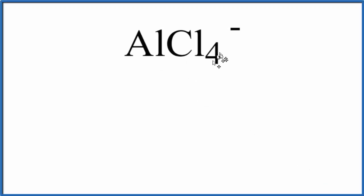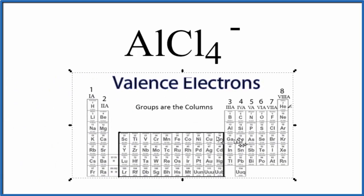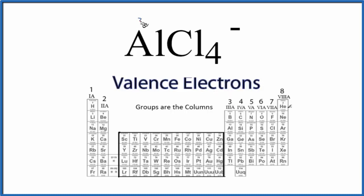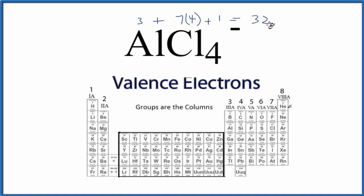To write the Lewis structure for AlCl4 minus, first we need to count up the valence electrons. On the periodic table we can see that aluminum, group 3 or 13, has 3 valence electrons. Chlorine, group 7A sometimes called 17, has 7 valence electrons. We have 4 of them, so we multiply that by 4. Since the ion is negative, we add one more electron. That gives us 3 plus 28 plus 1, for 32 total valence electrons for the AlCl4 minus Lewis structure.